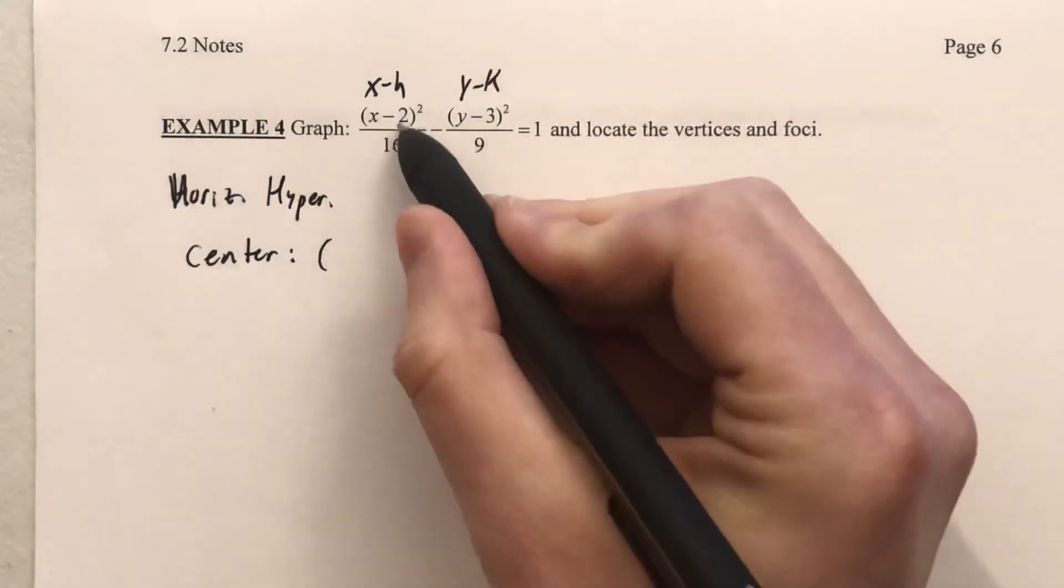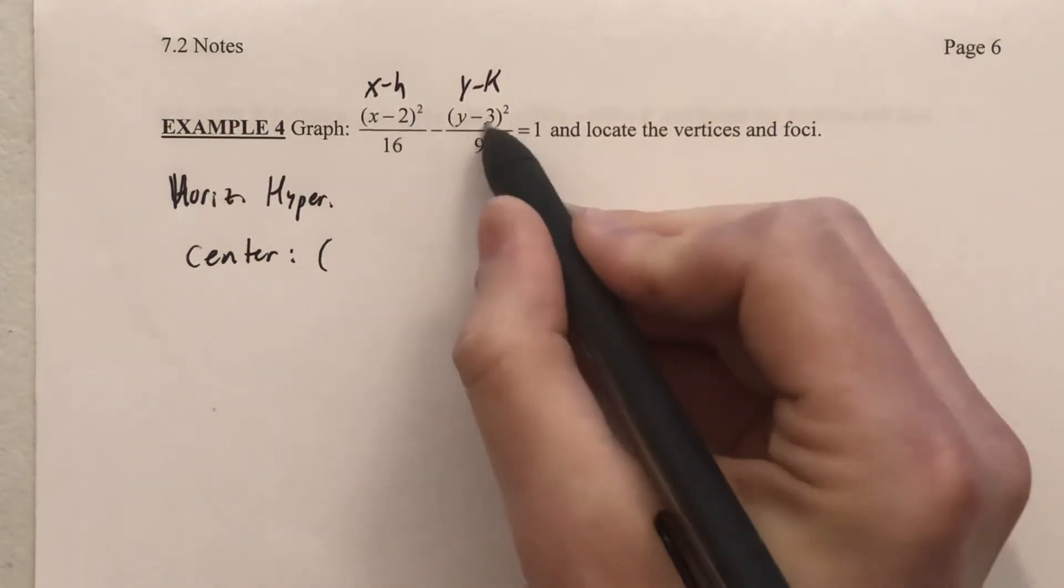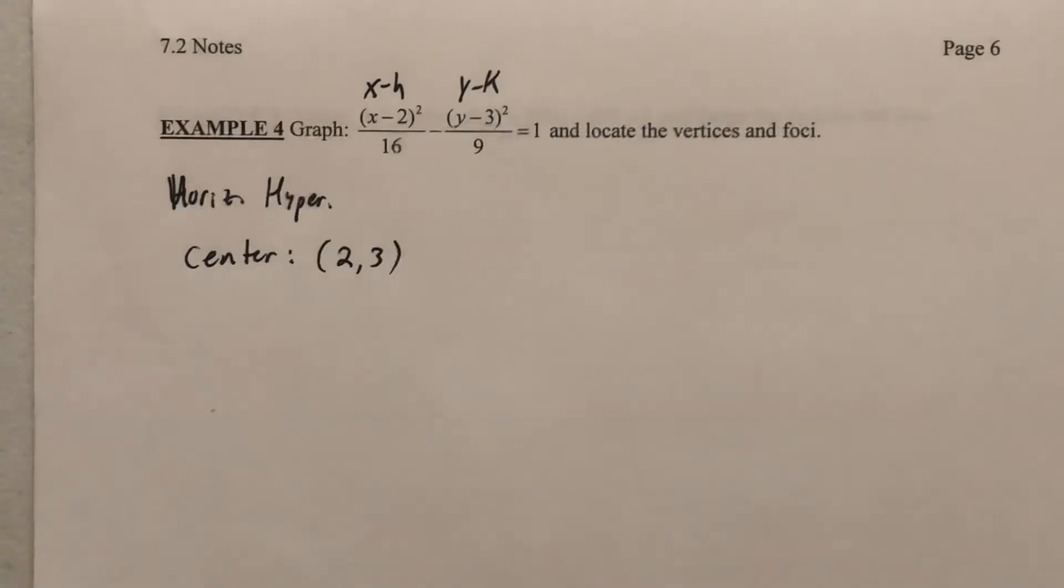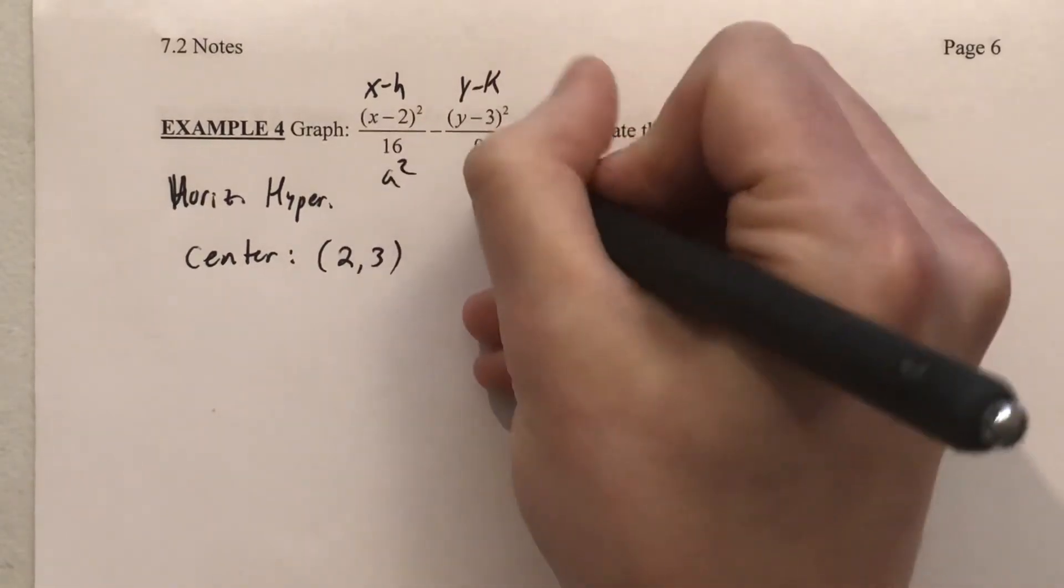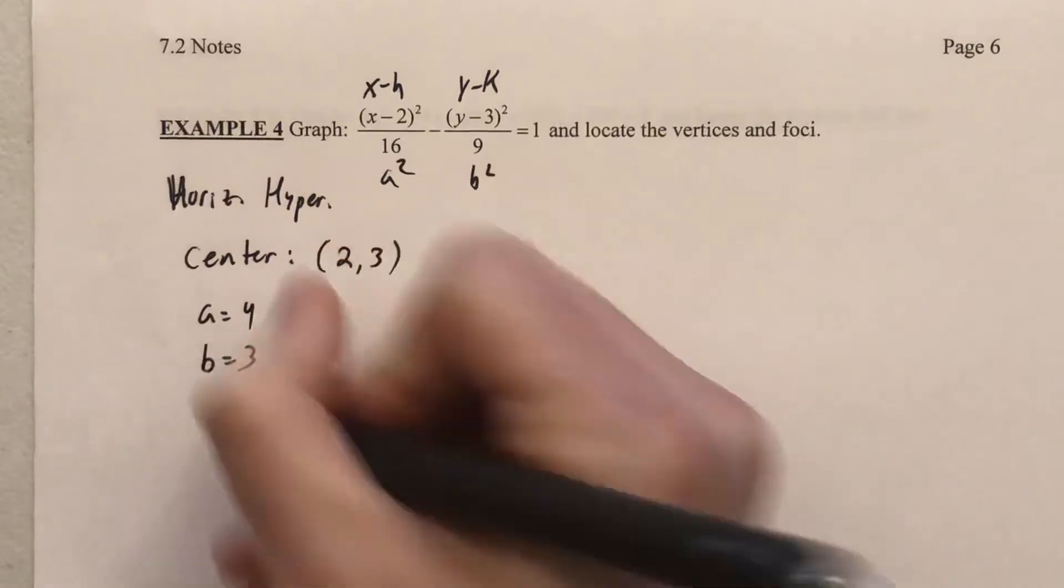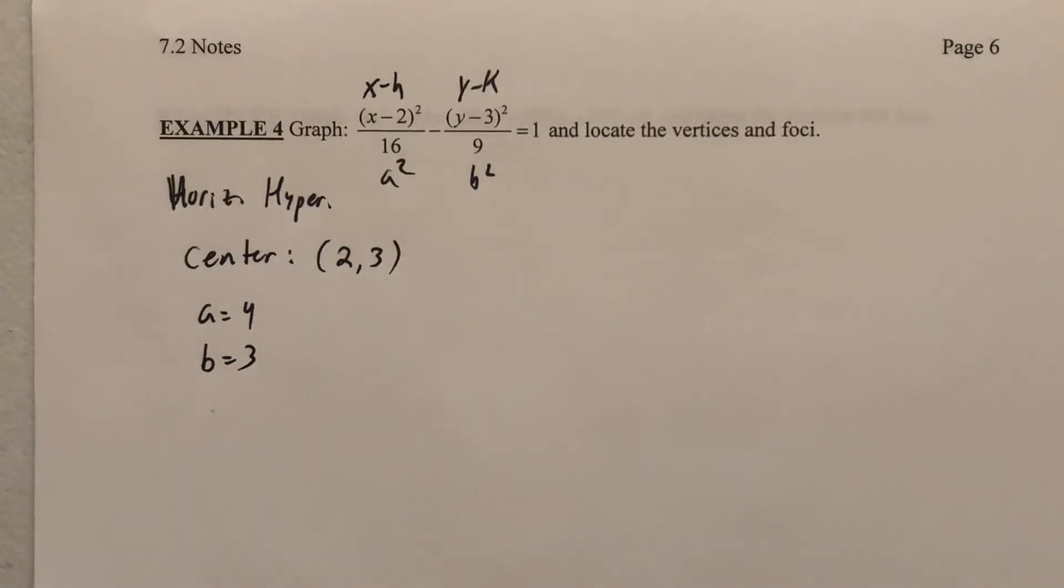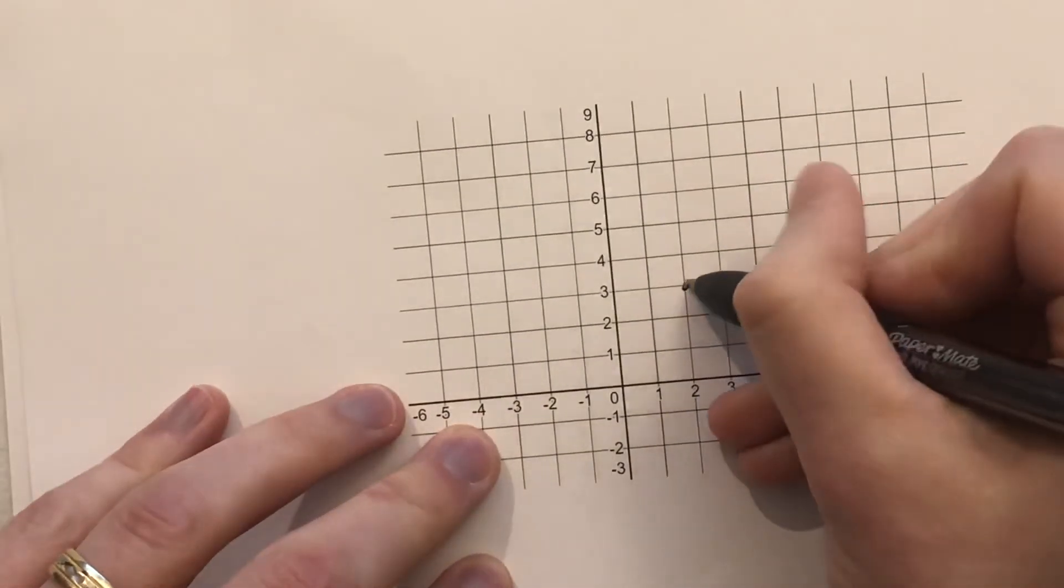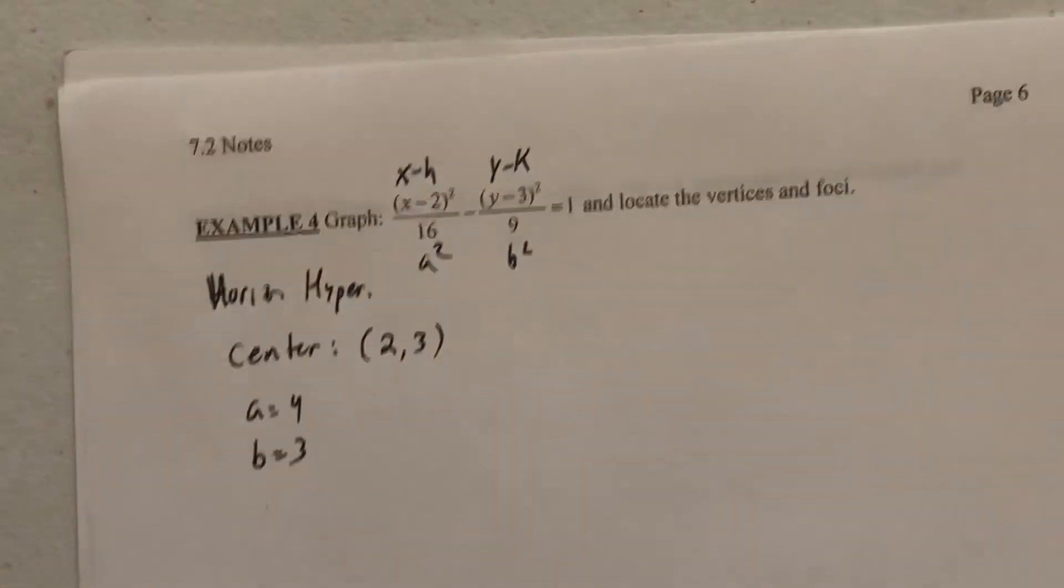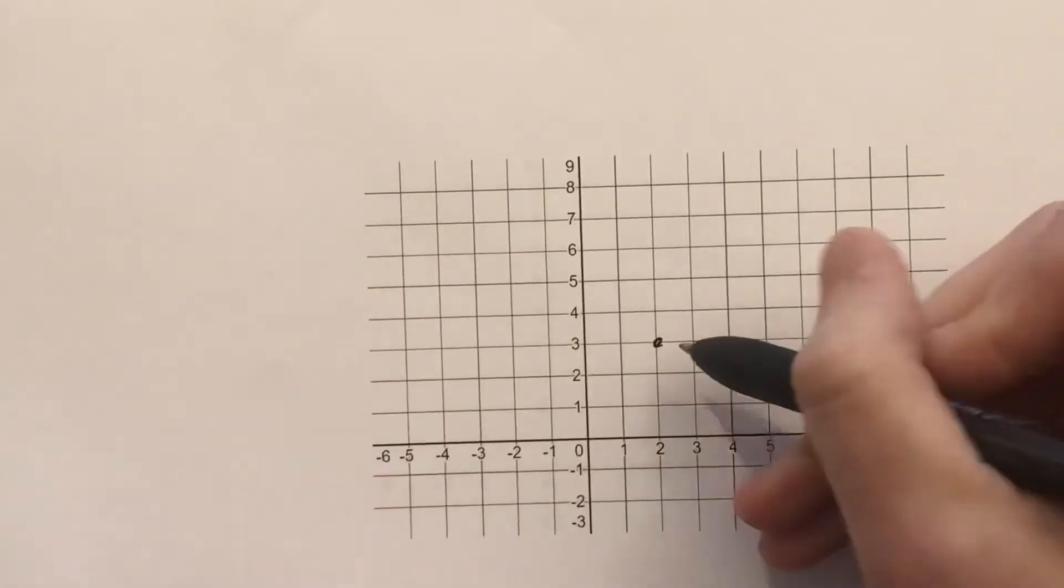But let's point out the center. So the center of hk, well this is minus 2, h is 2, and that's minus 3, k is 3. So the center at 2, 3. Then we have a squared and b squared. So a is 4 and b is 3. And let's use that information to get the start to this graph. Center of 2, 3. So 2, 3. A of 4 being associated with x tells me to go left and right 4.